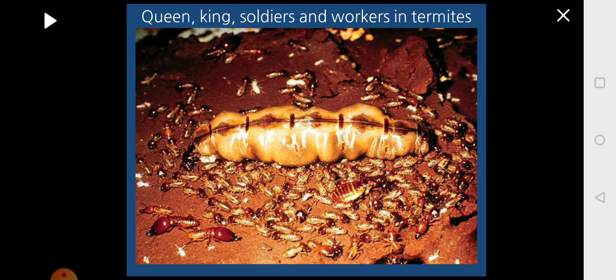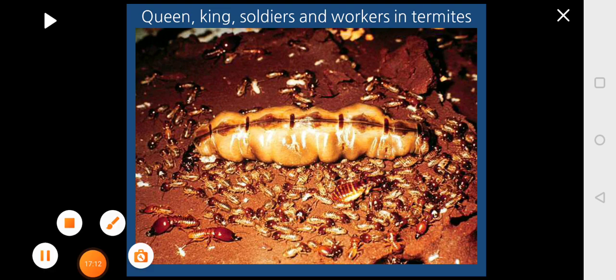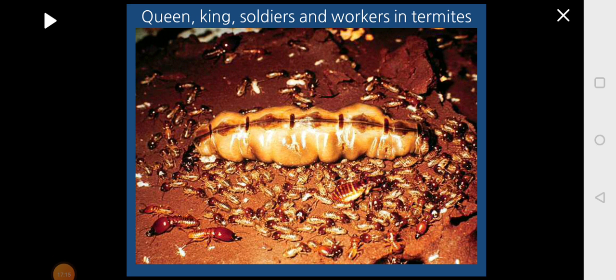The workers devour the body of the queen because it is very rich and that will be converted into nutritious compost. This is the live picture of the members of the termite colony in the termitarium. With this we have completed the social life in honeybee — covered in the previous video — and termites in this present video. Students, if you have any doubts you can get them clarified by asking questions in the chat box. Thank you.